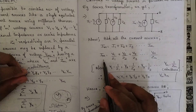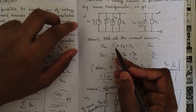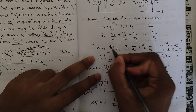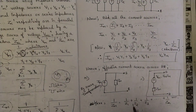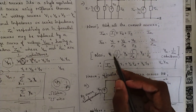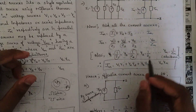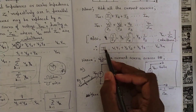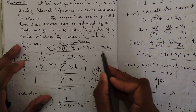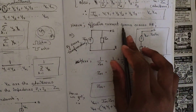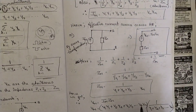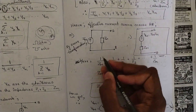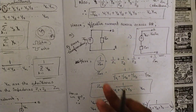After adding all the current sources we get Im = I1 + I2 + I3 + ... + In. Since I = V/R, I1 is replaced by V1/Z1, I2 by V2/Z2, V3/Z3, and so on up to Vn/Zn. We also know Y1 = 1/Z1, Y2 = 1/Z2 — the admittance is the reciprocal of impedance. Substituting, we get Im = V1·Y1 + V2·Y2 + V3·Y3 + ... + Vn·Yn, which is the numerator of the Vm formula. The effective current source across AB is Im, and we then find the equivalent Zm.